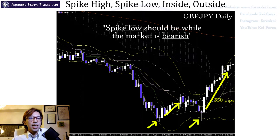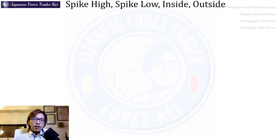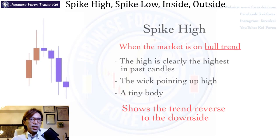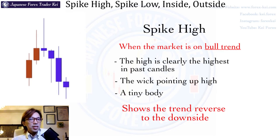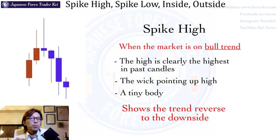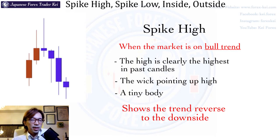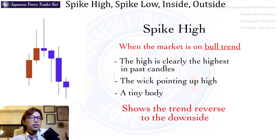Now I think you have an idea of what the spike low is like. Let's move on to the next one — it's the spike high. You may already have an idea what it's like, but this one is basically the other way around from the spike low. It also has a precondition: when you look for a spike high, always look for it while the market is on a bull trend. The wick should be clearly pointing up higher than the previous highs, and it shows a strong signal for a trend reversal to the downside.